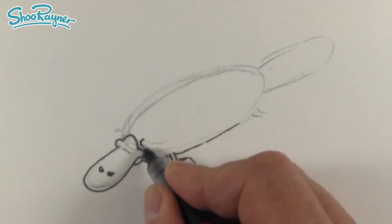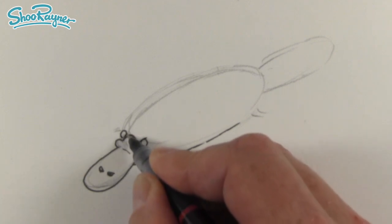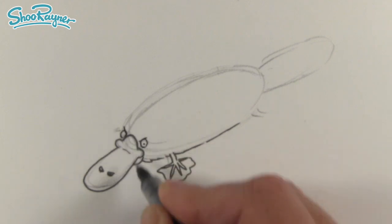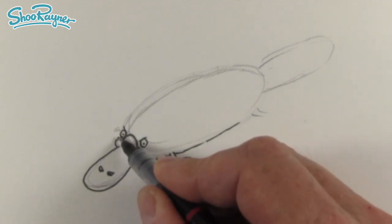I'm going to put an eye there and an eye there and a little bit of a cross kind of look and a dot in there for the eye. Very determined little creatures.